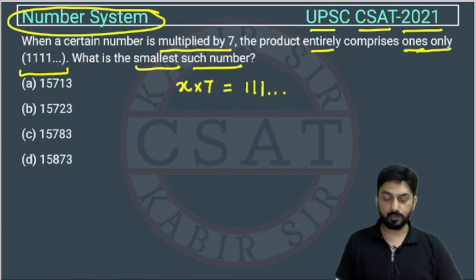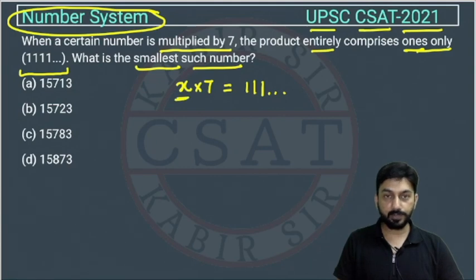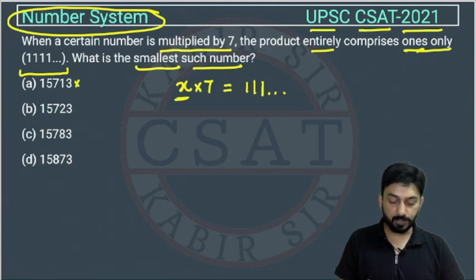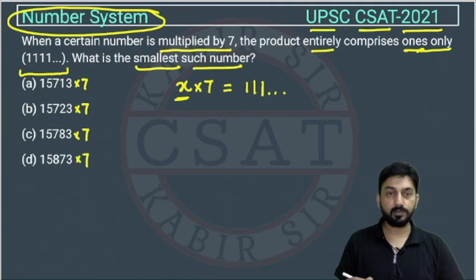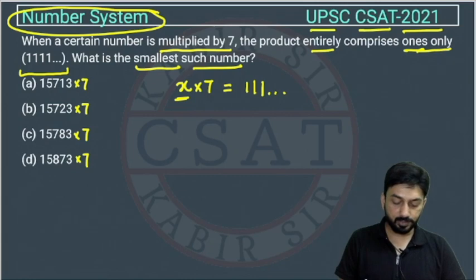So we have to find the smallest number. There are two approaches to solve this question. First is x we have to find and in the options x is given here, so we can multiply each number with 7 and we can see are we getting ones or not. All digits should be 1. So let us check in this.